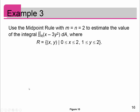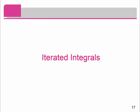Let's find the midpoints for the pieces of the rectangle and approximate it. We are given some information: we're going to divide the x and y-axis into two pieces in each direction for this particular rectangle, and we want to find the double integral over R of x minus 3y² dA. First thing you need to do is draw the picture.